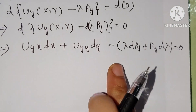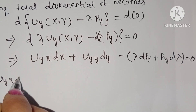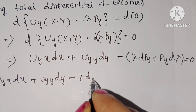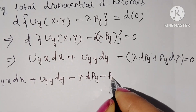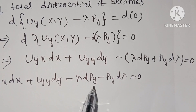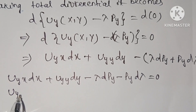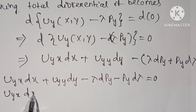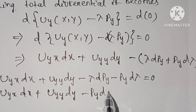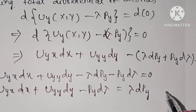After removing the bracket, this becomes u_yx·dx plus u_yy·dy minus λ·dpy minus py·dλ equal to zero. Taking λ·dpy to the right-hand side, this becomes u_yx·dx plus u_yy·dy minus py·dλ equal to λ·dpy. This is equation number five.